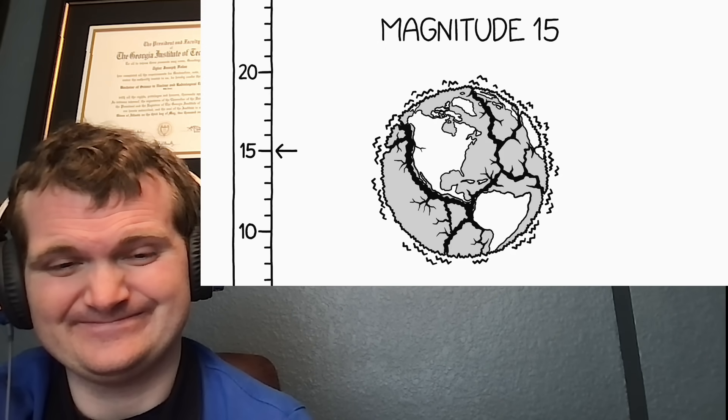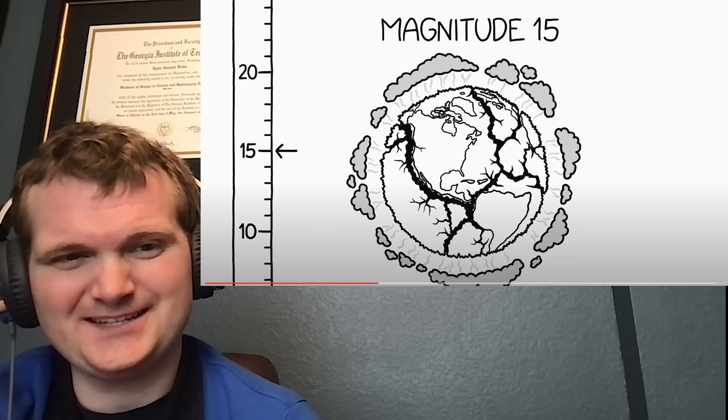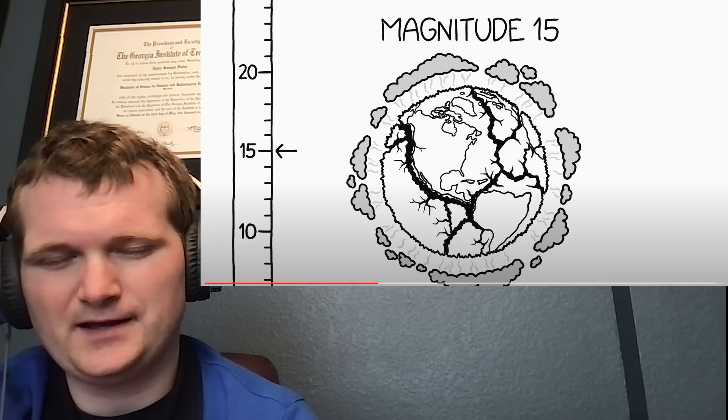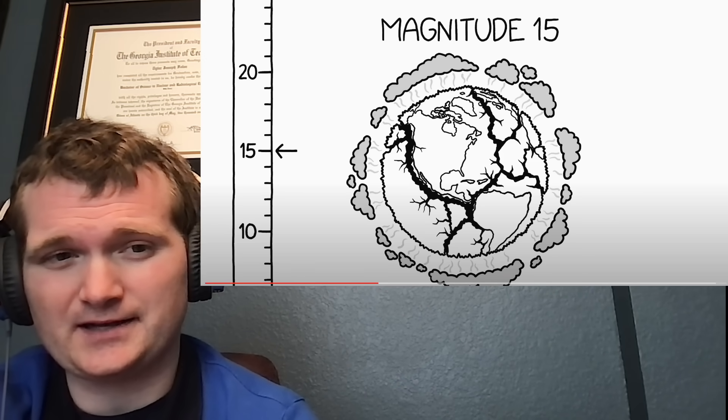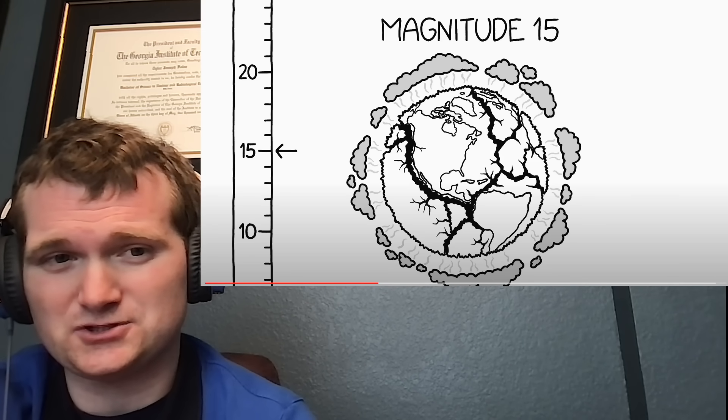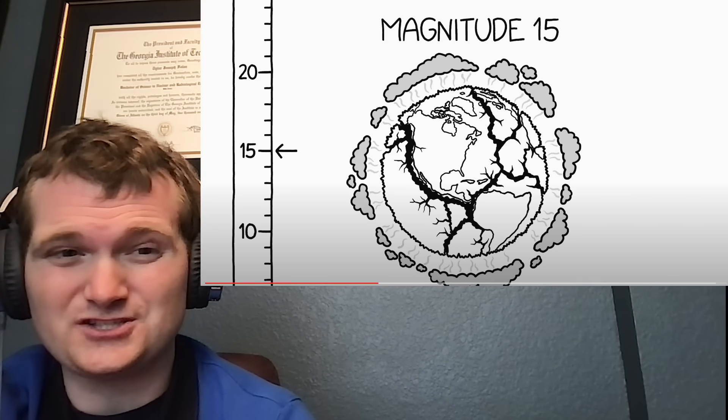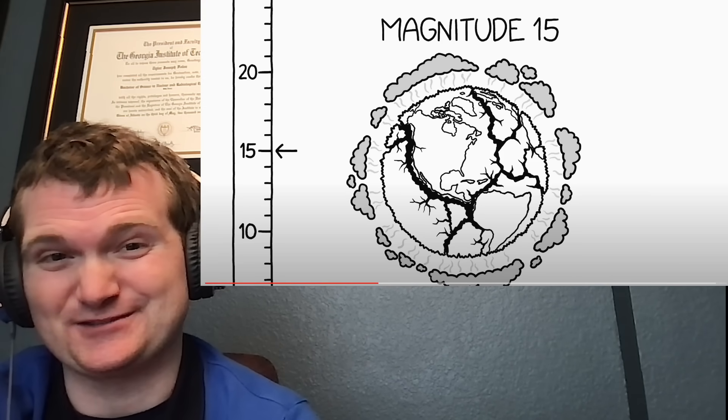A magnitude 15 earthquake would be a million times more powerful than that and involve the release of enough energy to evaporate all the water on Earth. So yeah, magnitude 15, that would make the asteroid that killed the dinosaurs look like a mosquito hitting your windshield. That asteroid impact, so just simply converting this magnitude into joules would give you between a 12 and a 13. So 15, nobody's surviving that one.